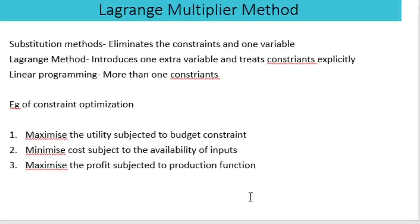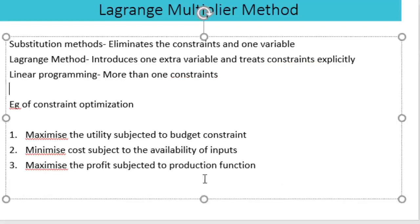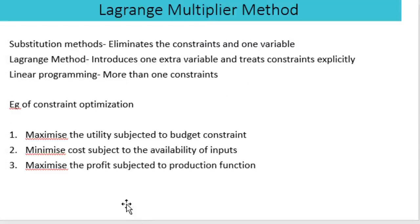The first is the substitution method. In the substitution method, we eliminate the constraint on one variable. In the Lagrangian method, we introduce one extra variable and treat the constraint explicitly. In linear programming, there will be more than one constraint.